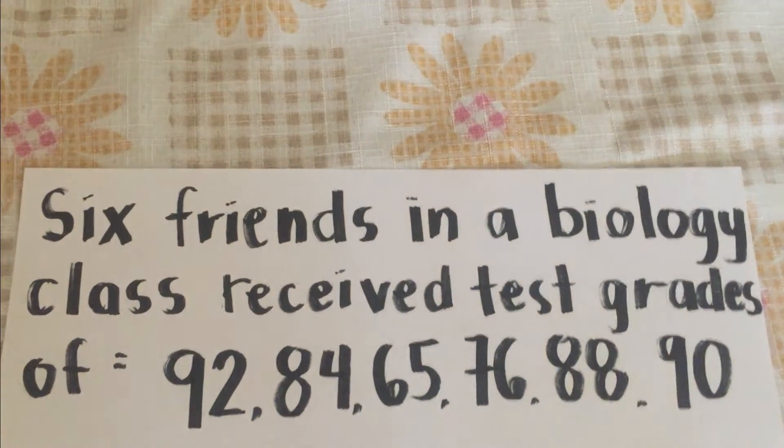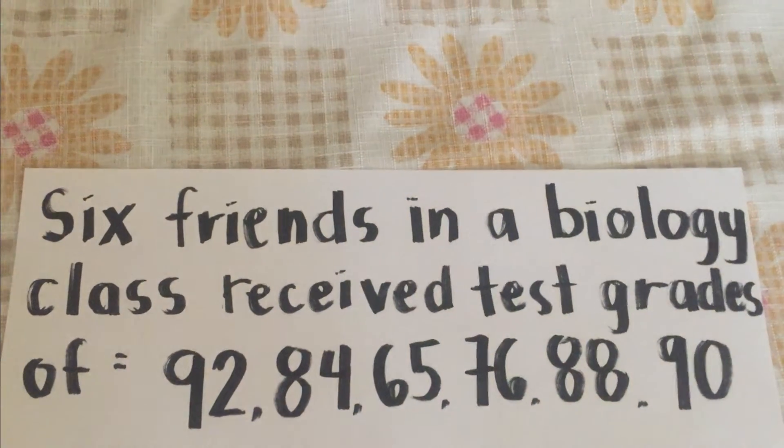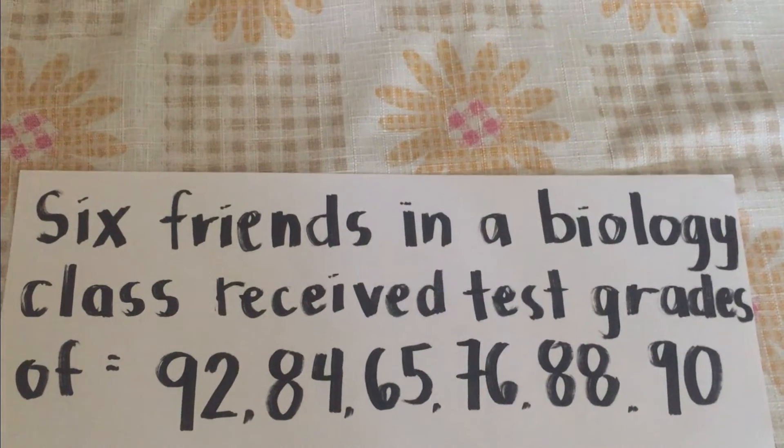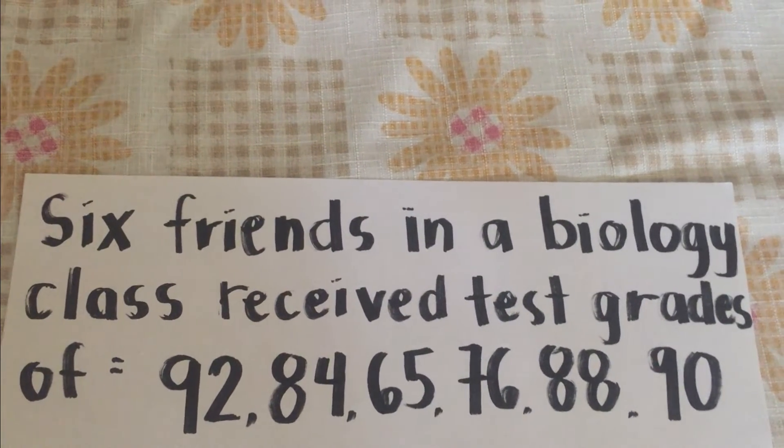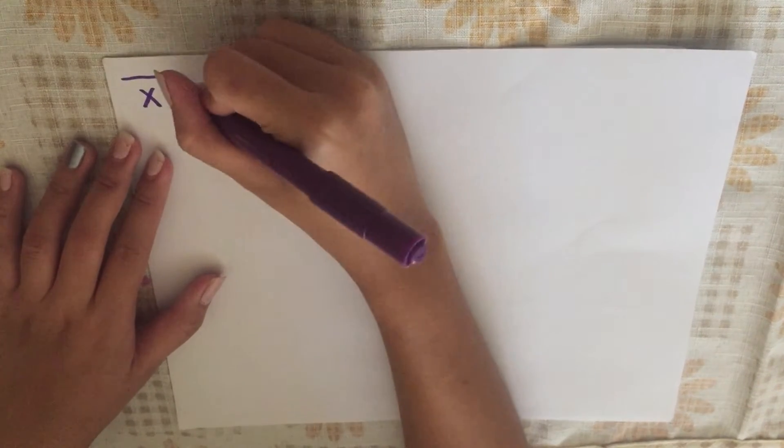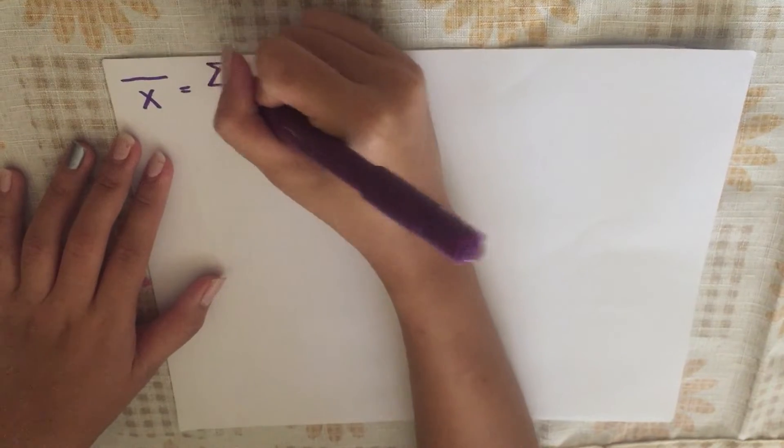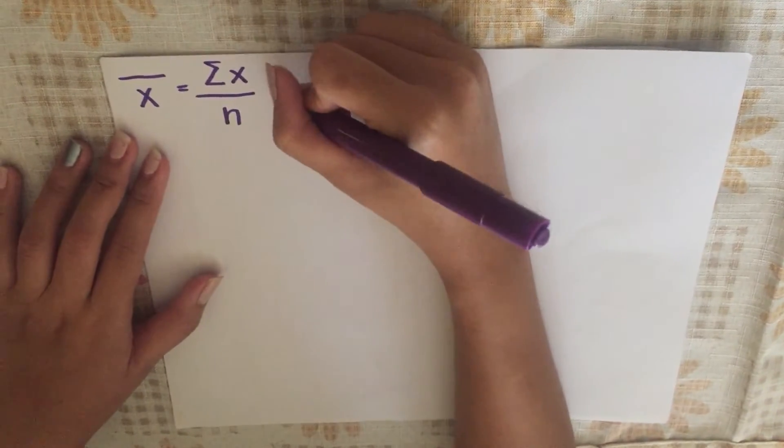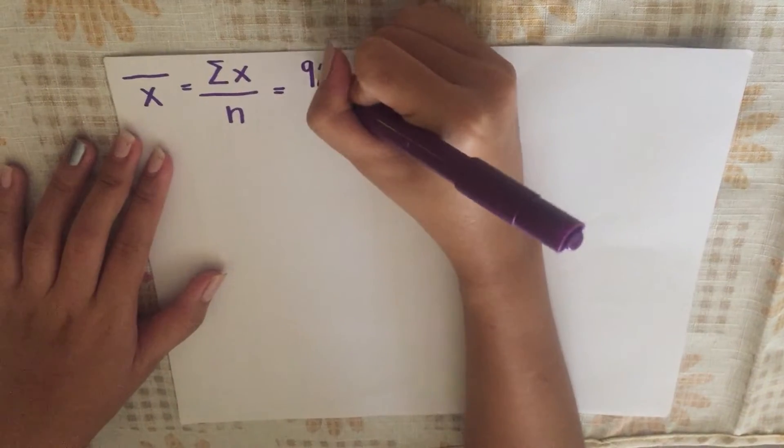Six friends in a biology class received test grades of 92, 84, 65, 76, 88, and 90. To solve for the mean, we are going to use the following formula. The mean is equal to the summation of x over n, which is the total number of the given values.